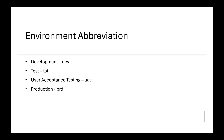Here are some quick environment abbreviations: development is 'dev', test is 'tst', user acceptance testing is 'uat', and production. You try to keep abbreviations to three letters to keep names short, but making sure your team understands these abbreviations is key to being successful.